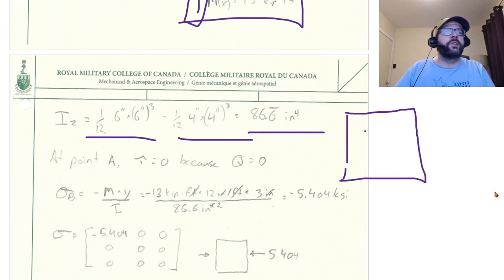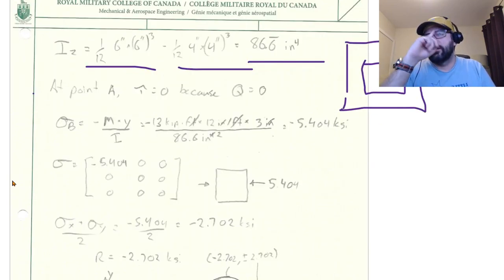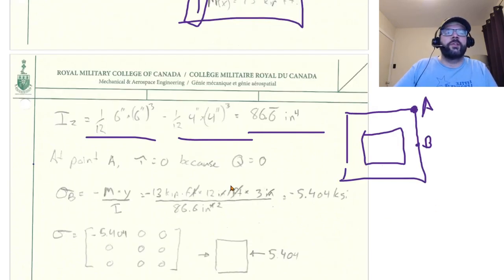Our bending stress is not zero. So the bending stress is going to be given by this formula here. So that's negative M times Y divided by I. So negative 13 kip feet times 12 inches per foot, so I can cancel the feet and use inches, times three inches is the Y distance there divided by the 86.3 inches to the fourth. Cancel out units that ends up being kips per inch squared which gives us negative 5.404 ksi.